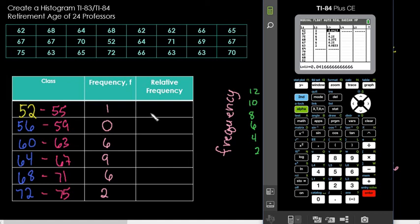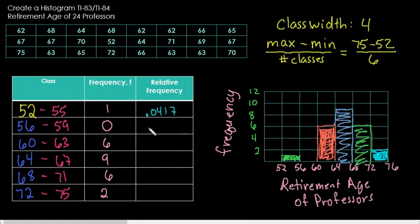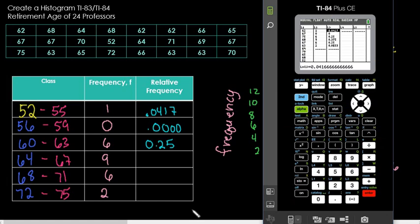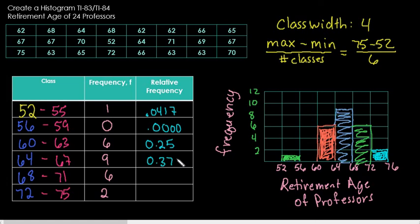I get 0.0417. This one gives 0.000 because there wasn't any in that category. This one is 0.25, 0.375, again 0.25, and our last one is 0.0833. This is another way of helping you fill in the table using the aid of a graphing calculator. Hopefully this helped you see how to create a frequency histogram. If a relative frequency histogram was asked for, all we would do is change this scale to match the relative frequency and label it as relative frequency. As always, thanks for watching.